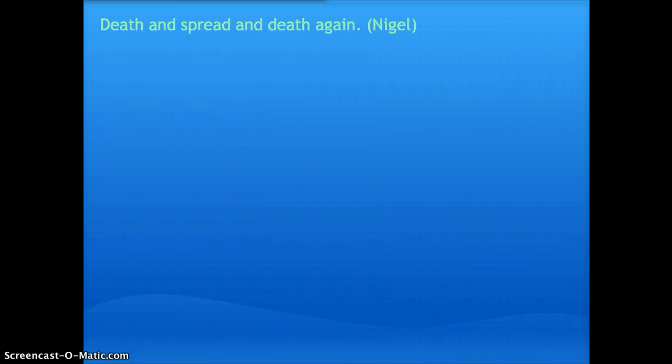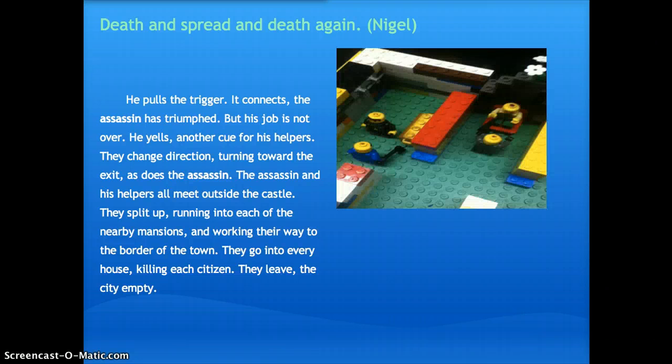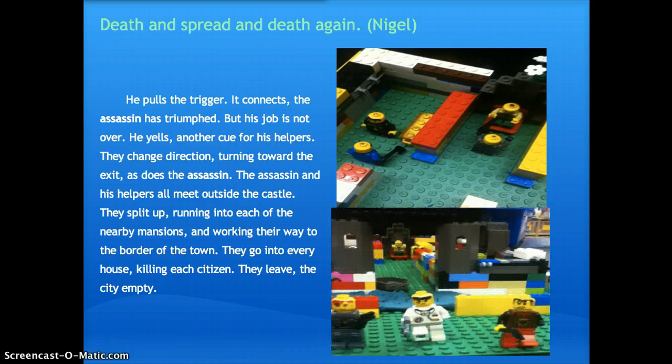Death and spread and death again. He pulls the trigger. It connects. The assassin has triumphed, but his job is not over. He yells. Another cue for his helpers. They change direction, turning toward the exit, as does the assassin. The assassin and his helpers all meet outside the castle. They split up, running into each of the nearby mansions, working their way into the border of the town. They go into every house, killing each citizen. They leave, the city's empty.